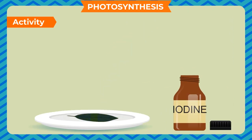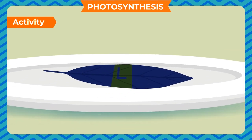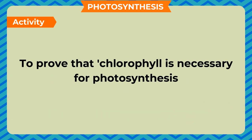Observation: the part of the leaf that received sunlight — the L-shaped portion — and the rest of the leaf exposed to sunlight both turn blue-black in color. Conclusion: since the portion of the leaf exposed to sunlight shows the presence of starch, this proves that sunlight is necessary for photosynthesis in plants.